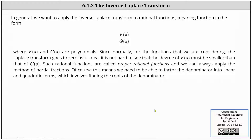In general, we want to apply the inverse Laplace transform to proper rational functions in the form F(s)/G(s), where F(s) and G(s) are polynomials and the degree of F(s) is smaller than that of G(s). Such rational functions are called proper rational functions, and we can always apply the method of partial fractions. This means we need to factor the denominator into linear and quadratic factors. If the denominator is a quadratic that doesn't factor, we can complete the square and use the shifting property.